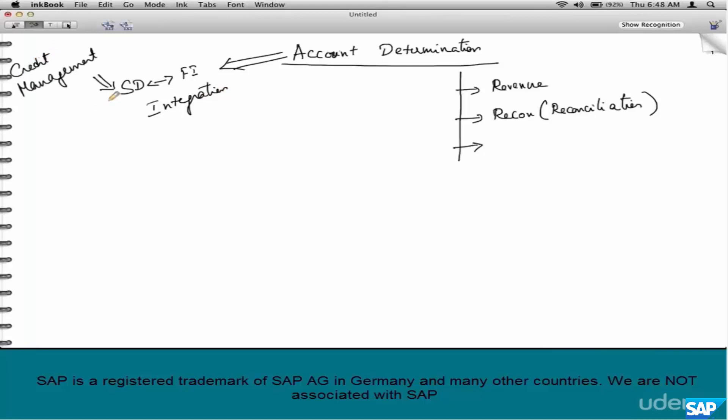Credit management is another area that falls under SDFI integration. Both these areas are typically configured by both SD and FI consultants together. But most of us are not from finance background, so before we jump into the configuration behind account determination, let's understand the basics of accounting. We will understand some basics like what is a credit, what is a debit, what is a recon account. This is not really necessary for an SD consultant, but I believe these basics are really necessary to do a good handshake with your FI consultant. This is a cross-functional area, so if you understand the basics of accounting, it will help you explain what you need from the FI consultant.